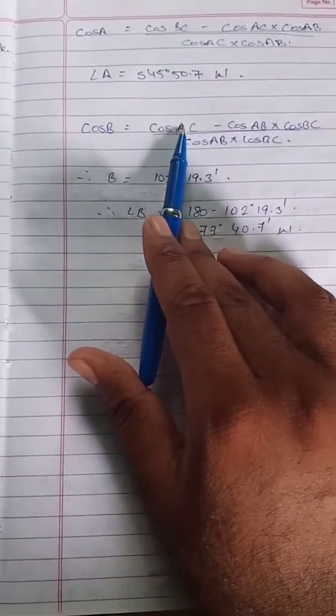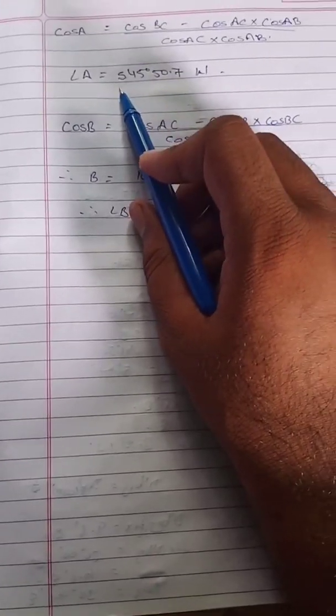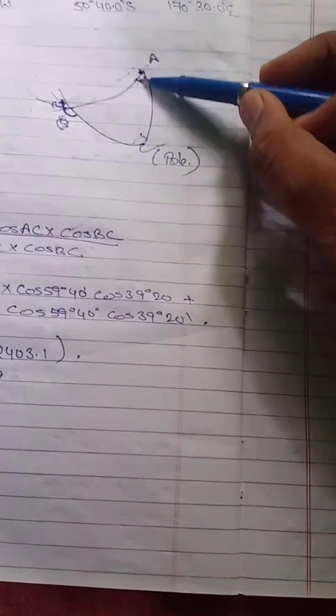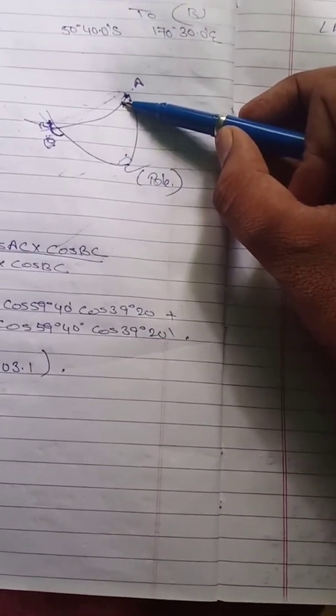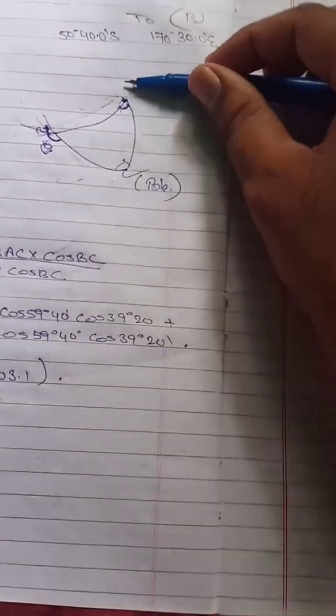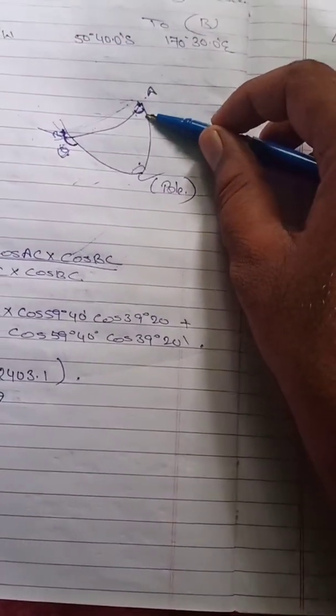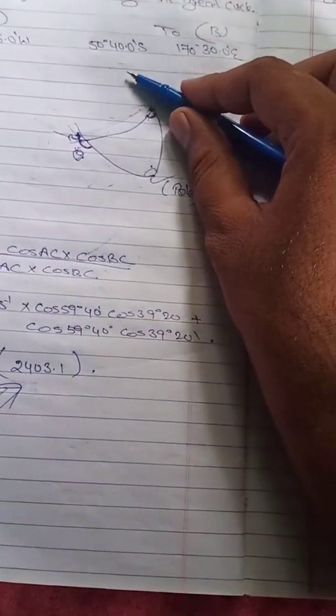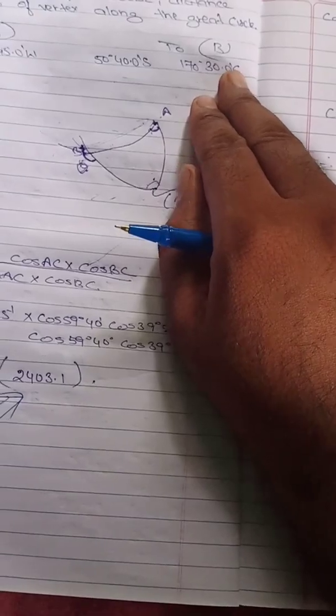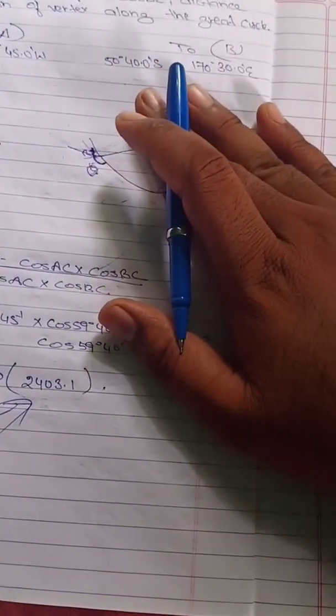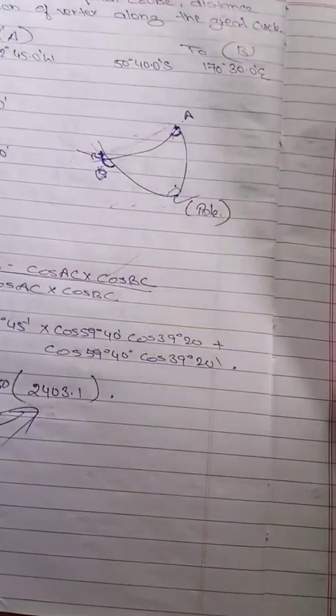Now we find angle A — the initial course. Using the cosine formula: cos(A) = [cos(BC) − cos(AB)·cos(AC)] / [sin(AB)·sin(AC)]. The main challenge is deciding the quadrant prefix for the angle. Once you've drawn the correct figure, it becomes simple. Since we are in the south quadrant and moving westward as per the figure, the prefix is South West.